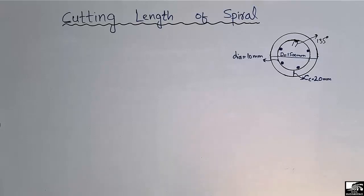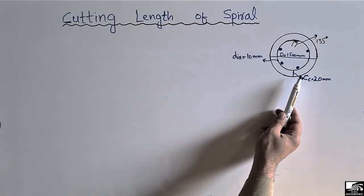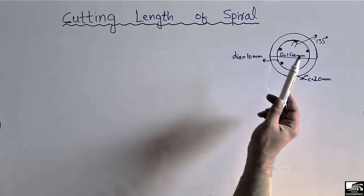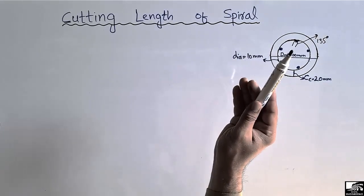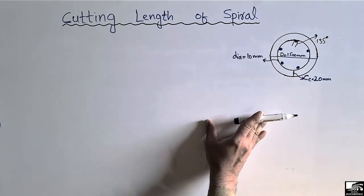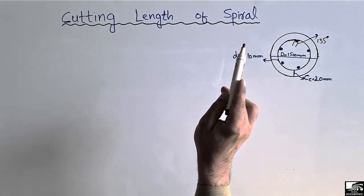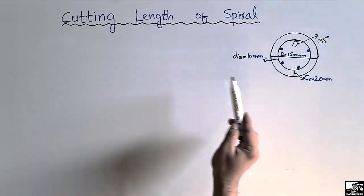Welcome back to E7 Engineering YouTube channel. Today we are going to find out the cutting length of the spiral for a circular column. The spiral is a transverse reinforcement used in the circular column. For rectangular or square columns we have stirrups, but for the circular column the transverse reinforcement is known as the spiral.